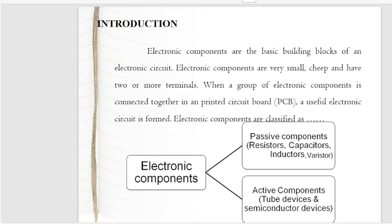Basically, an electronic circuit is a combination of electronic passive components and electronic active components. Electronic components are classified as passive components, which includes resistors, capacitors, inductors, semiconductors, potentiometers, thermistors, and many other components. Active components include tube devices and semiconductors.